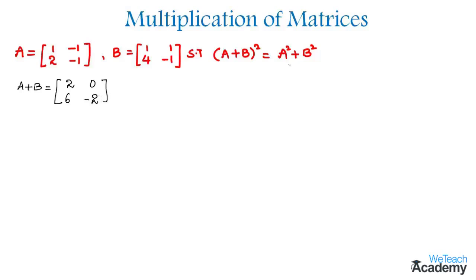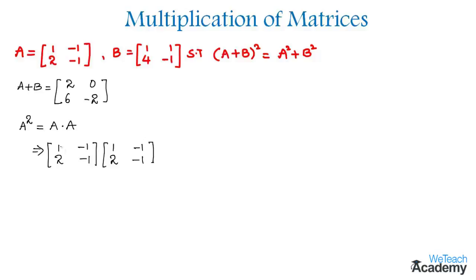Now let us find the matrix A². A² can be written as A into A. By multiplying matrix A two times, we get the value of A². It satisfies the condition of two columns in the first matrix equal to two rows in the second matrix. By multiplying the first row with the first column, we get one into one which is one, plus minus one into two which is minus two.